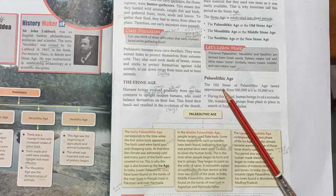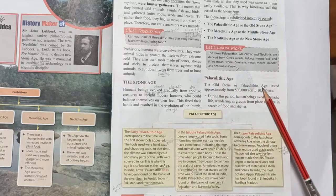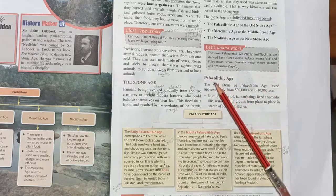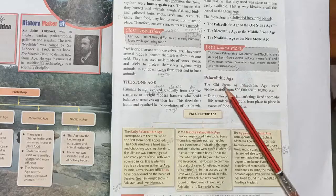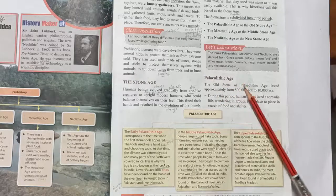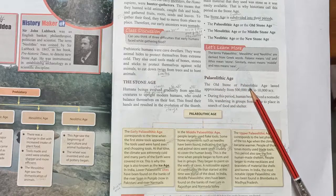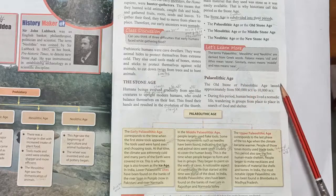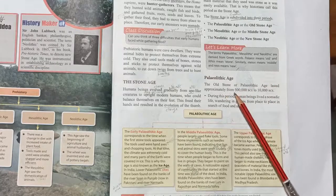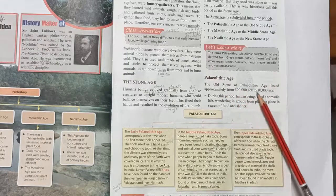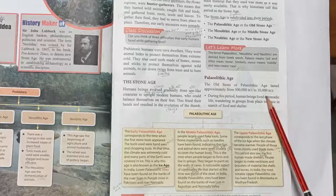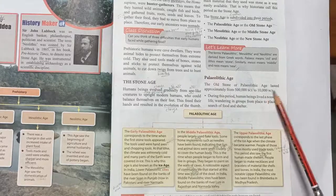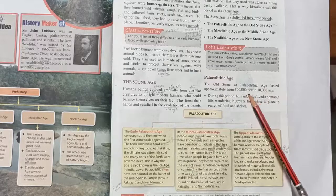The old stone, or Paleolithic age. The term Paleolithic comes from 'Paleo' meaning old, and 'Lithic' meaning stone — so it means old stone age. The Paleolithic age lasted approximately from 10,000 BCE to 5,000 BCE.